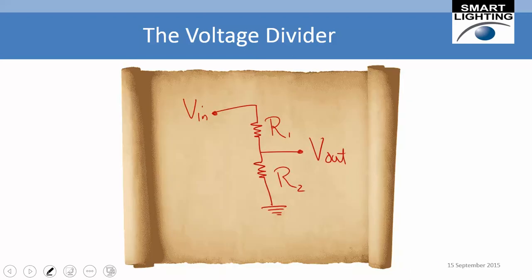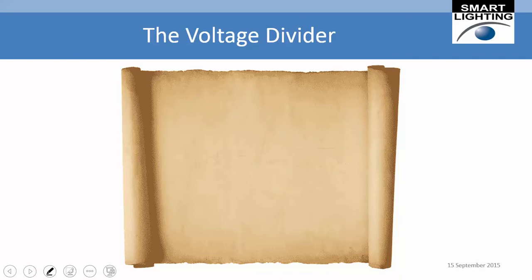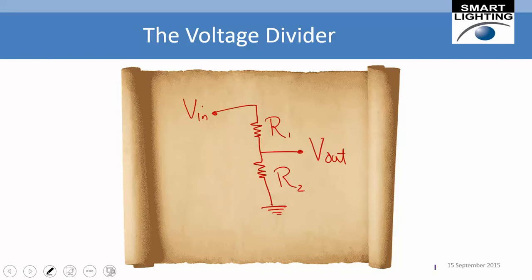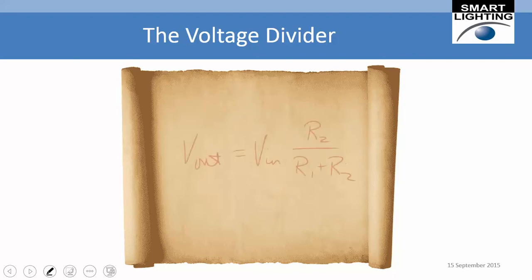Here's the voltage divider in its most general form. The relationship between output voltage and input voltage uses R1 as the resistor on top and R2 as the one on the bottom — the resistor we're taking the voltage across.